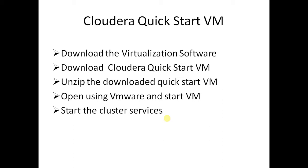First we need to download any virtualization software and install it in your system. Make sure you have enough RAM in your laptop or desktop — you need a minimum of 8 GB RAM. The virtualization software can be either VMware or VirtualBox. If you are doing this on your office machine, you need to get prior approval from your IT security team.